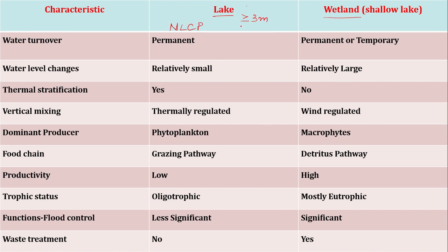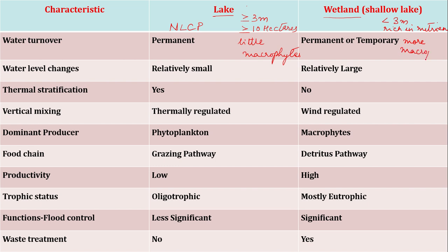The water cover should be spread over at least 10 hectares — the surface area of the lake should be at least 10 hectares — and lakes should have very little macrophytes or hydrophytes. Wetlands, in turn, are the exact opposite: they are very shallow, with a depth of less than three meters, are very rich in nutrients, and are abundant in macrophytes. You can pause the video here to go through the differences between a wetland and a lake.